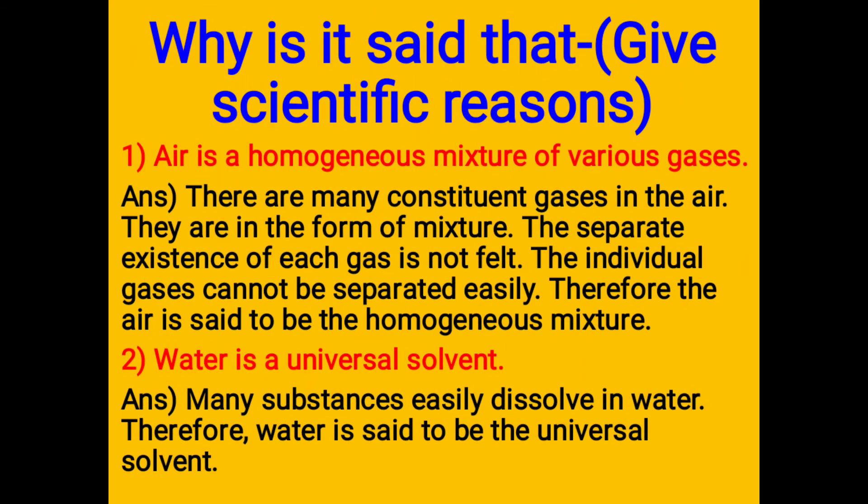Give scientific reasons: 1. Air is a homogeneous mixture of various gases. There are many constituent gases in the air and they exist as a mixture. The separate existence of each gas is not felt and individual gases cannot be separated easily. Therefore, air is said to be a homogeneous mixture.